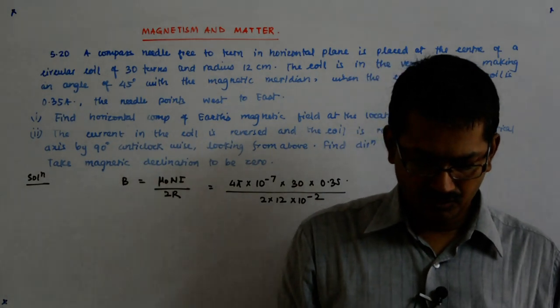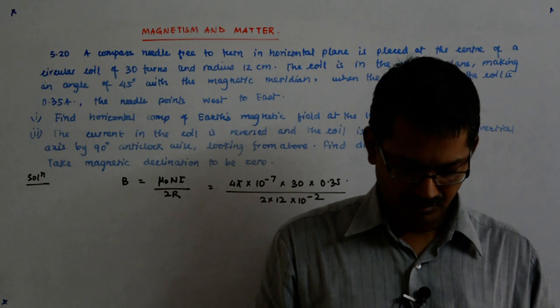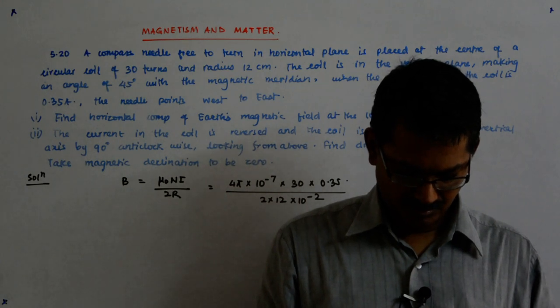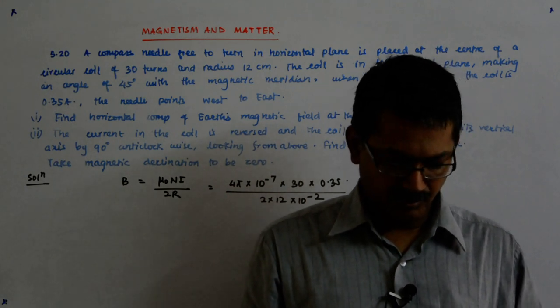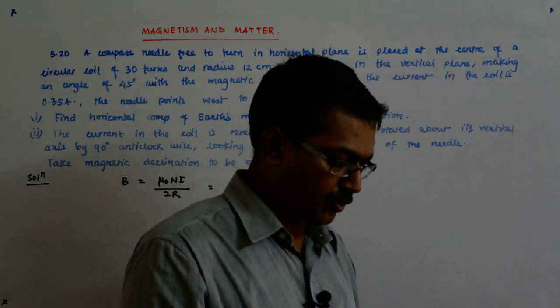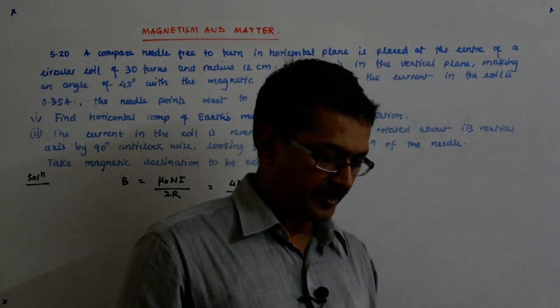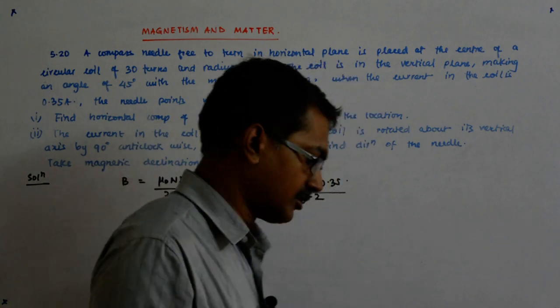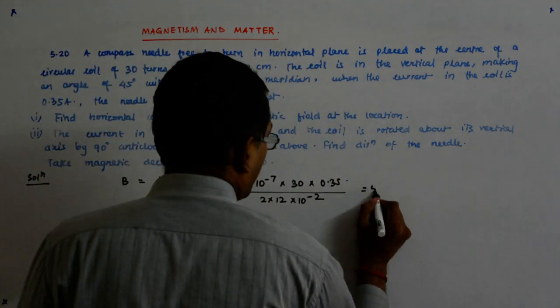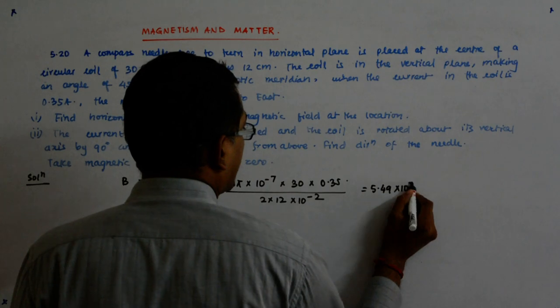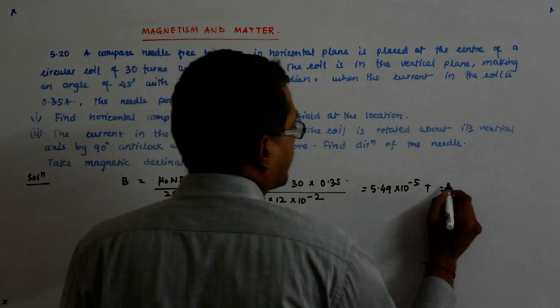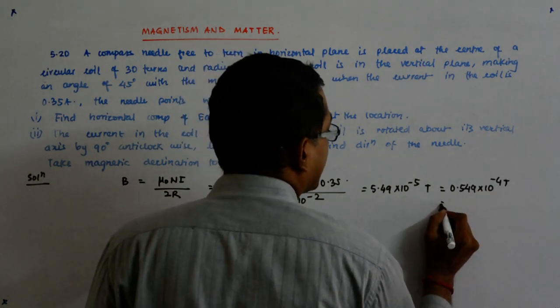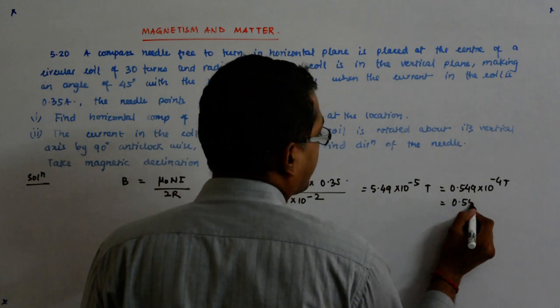So that is equal to 5.49 into 10 to the power minus 5. So that gives me 0.549 into 10 to the power minus 4.